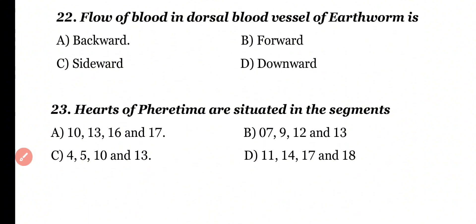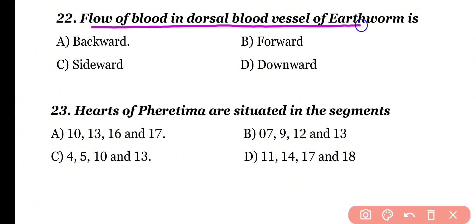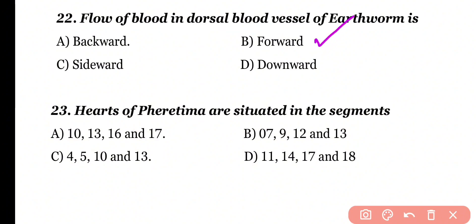Question number 22. Flow of blood in the dorsal blood vessel of earthworm is: backward, forward, sideward, or downward. Correct answer is option B. The dorsal blood vessel is the largest blood vessel in earthworm, and the direction of blood flow in it is forward.